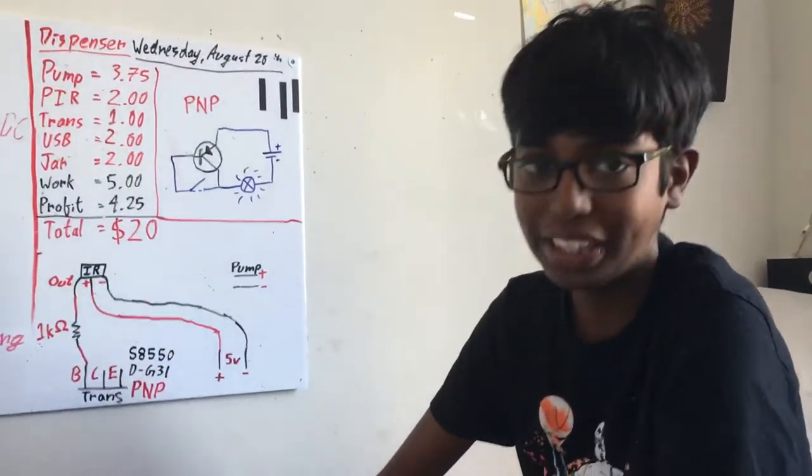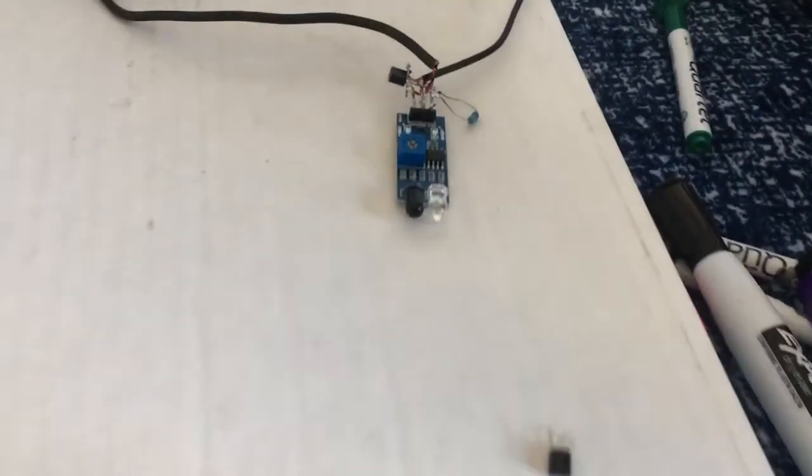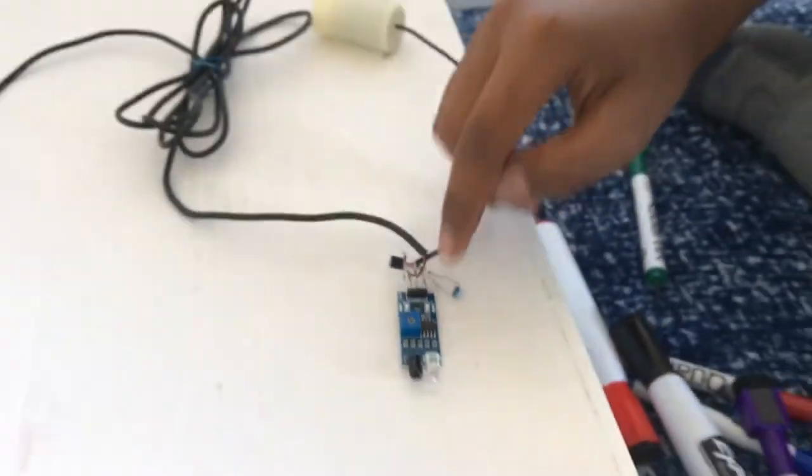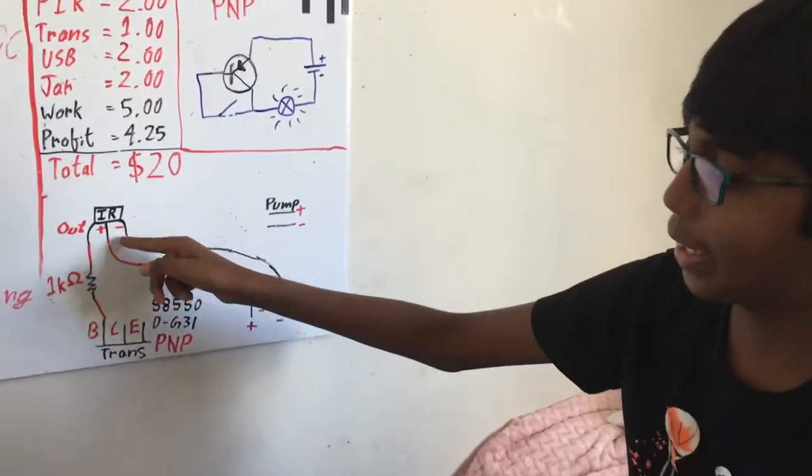It's the proximity sensor which you see right here and it has three pins. It has the out pin which gives a positive voltage and then we have the VCC and the ground which is basically the voltage needed for it.